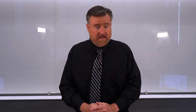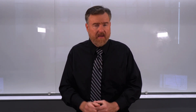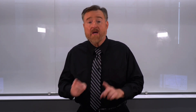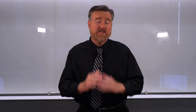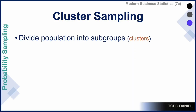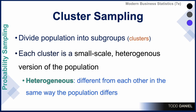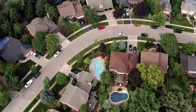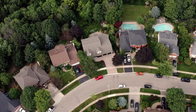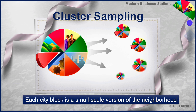Another technique we could use for random sampling is called the cluster sampling technique. It's going to sound similar to the stratified random sample, but there is one very distinct difference. In cluster sampling, we divide our population into subgroups which are called clusters. Each cluster is a small-scale heterogeneous version of the population — heterogeneous meaning the variability within the sample means elements differ from each other in the same way that the population differs.